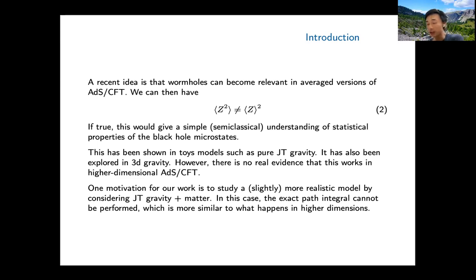This is interesting because if wormholes can be understood in an averaged AdS/CFT, it gives a semi-classical way to probe statistical properties of black hole microstates. Gibbons and Hawking gave us a way to understand the Bekenstein-Hawking entropy, telling us the value of entropy. But using wormholes—if this idea is correct—we could get much finer information about the microstates. This has been shown explicitly in toy models such as pure JT gravity and is being explored in 3D gravity.